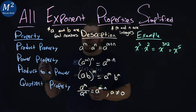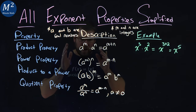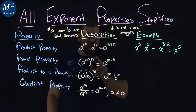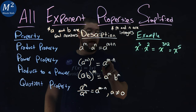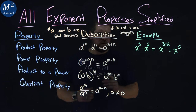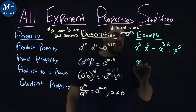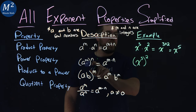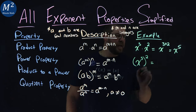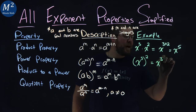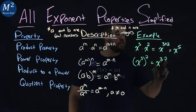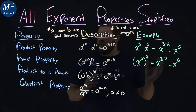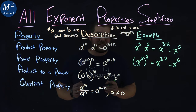Now let's talk about the power property. It states that if we have a to the m power all raised to the n power, that is the same thing as a to the m times n power. So if we have x to the third power all raised to the second power, m is three and n is two, giving us x to the three times two, which is x to the sixth power.